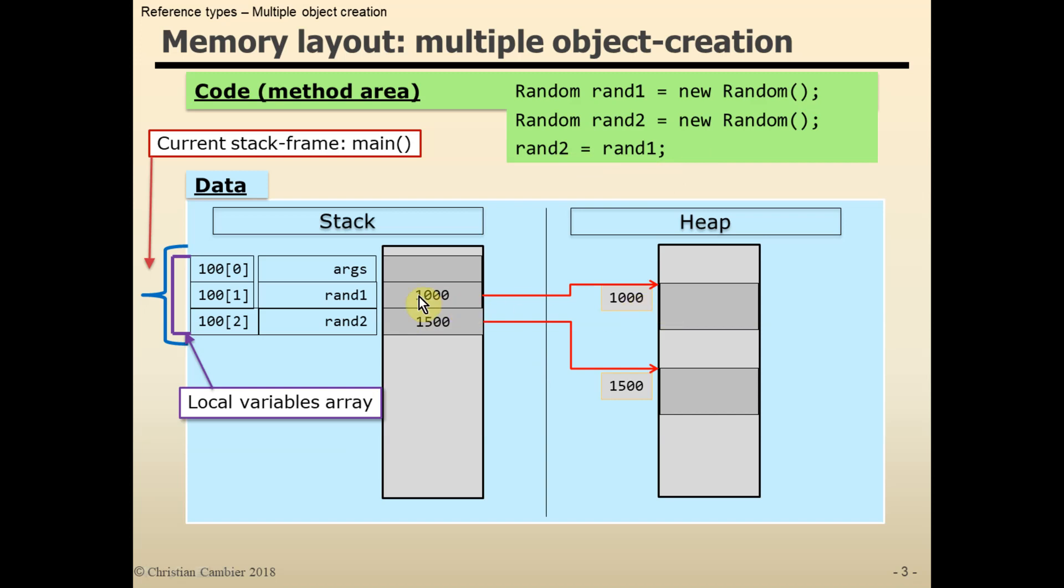We then assign it to the variable located at the left-hand side of the assignment, reference variable rand2. So its content of 1500 will be overwritten by the value of 1000. And the final result is that rand2 points to the object located at address 1000.